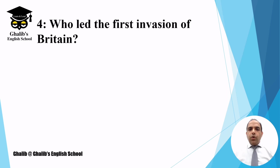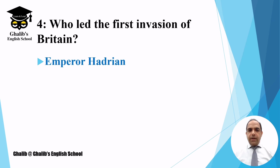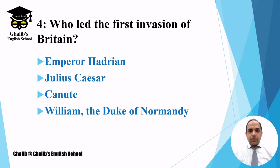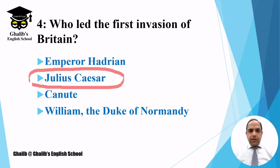Question number four: who led the first invasion of Britain? The options are Emperor Hadrian, Julius Caesar, Canute, or William the Duke of Normandy. The first foreign invasion was led by Julius Caesar, a Roman leader who invaded England in 55 BC, though that invasion was not successful.